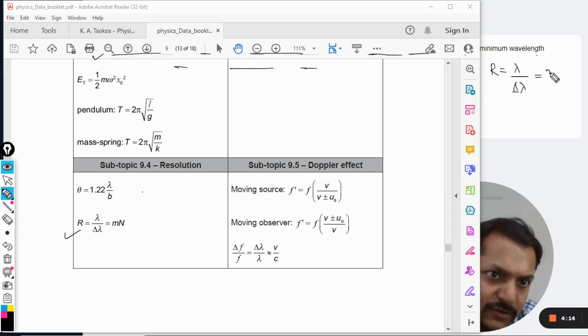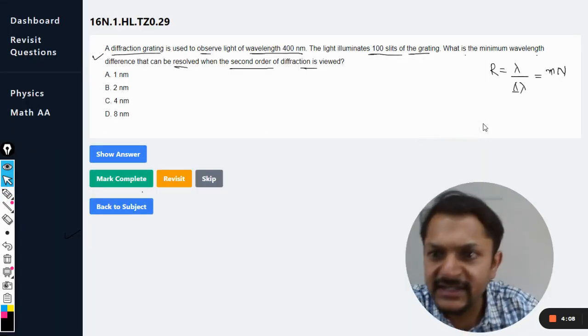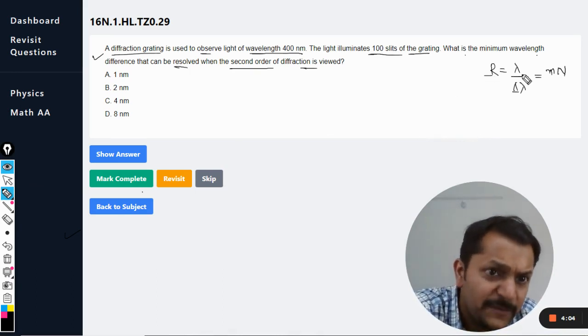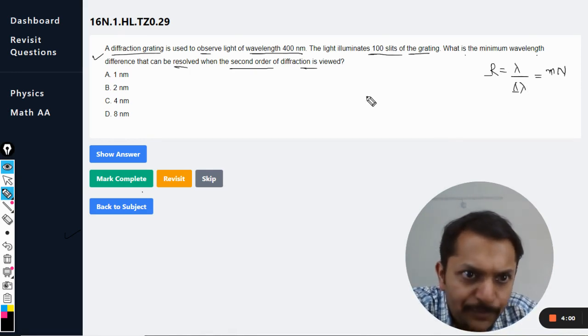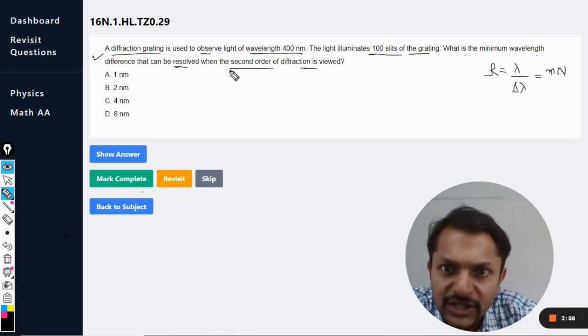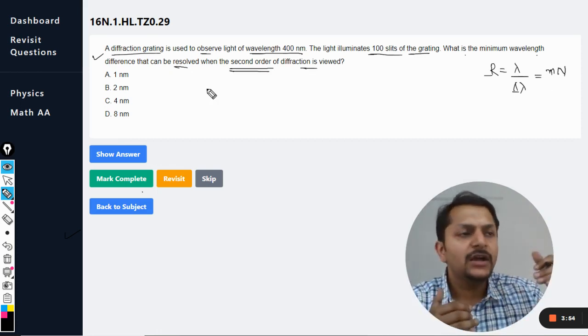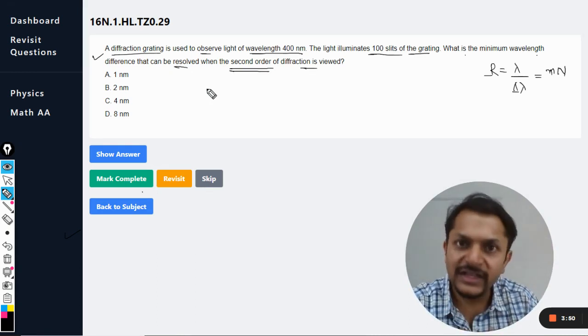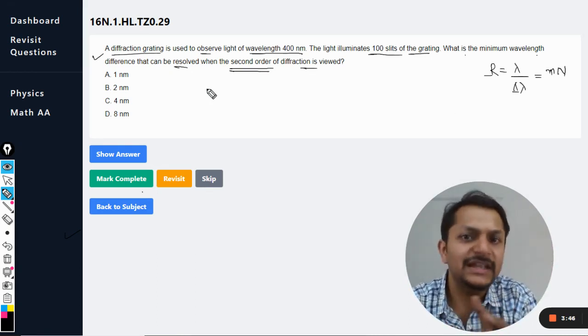So the resolution is given by lambda divided by delta lambda equals small m into capital N. I would be explaining what these symbols basically stand for. R is basically the resolution, lambda over delta lambda. And m is the order - by order you mean how many maximas are there, like two maximas or three maxima other than the central maxima. So m can be taken as the second order.